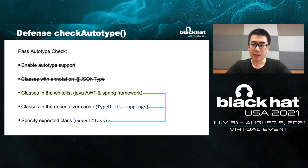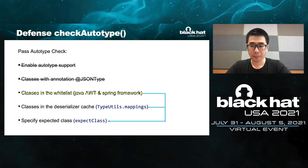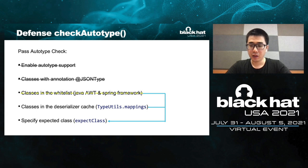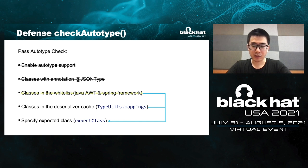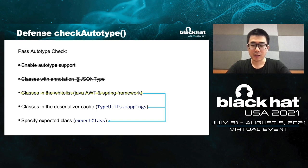Next, classes in the whitelist. The whitelist is initialized as a final static hashcode list with about 60 classes mainly related to Java Abstract Window Toolkit and Spring Framework. Those classes in the whitelist are high-level and not easy to extend. So the first three cases are not our first choice for bypass. Next, classes in the deserializer cache. And the last one: the second parameter of checkAutoType, expectClass, and the subclass of it. Importantly, expectClass is a parameter with type Class, not String — meaning the expectClass has already passed the auto type check. So the source of expectClass is classes in the whitelist and the deserializer cache.